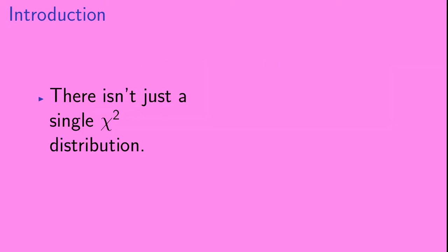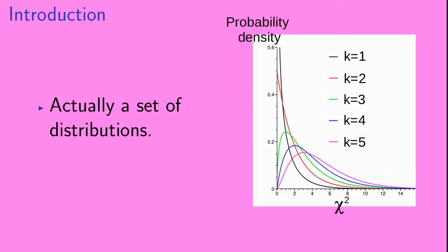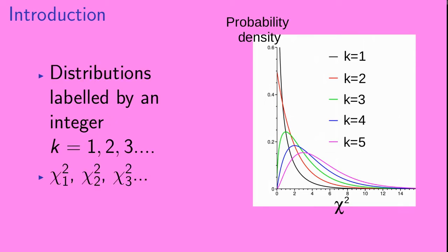The first thing to know is that there isn't just a single Chi-Squared Distribution — it's actually a set of distributions. These distributions are labeled by a positive integer that we're going to call k, so k can take on the values 1, 2, 3, etc. We have these different Chi-Squared Distributions labeled by the value of k, and the first five of these distributions are shown in the plot at right.